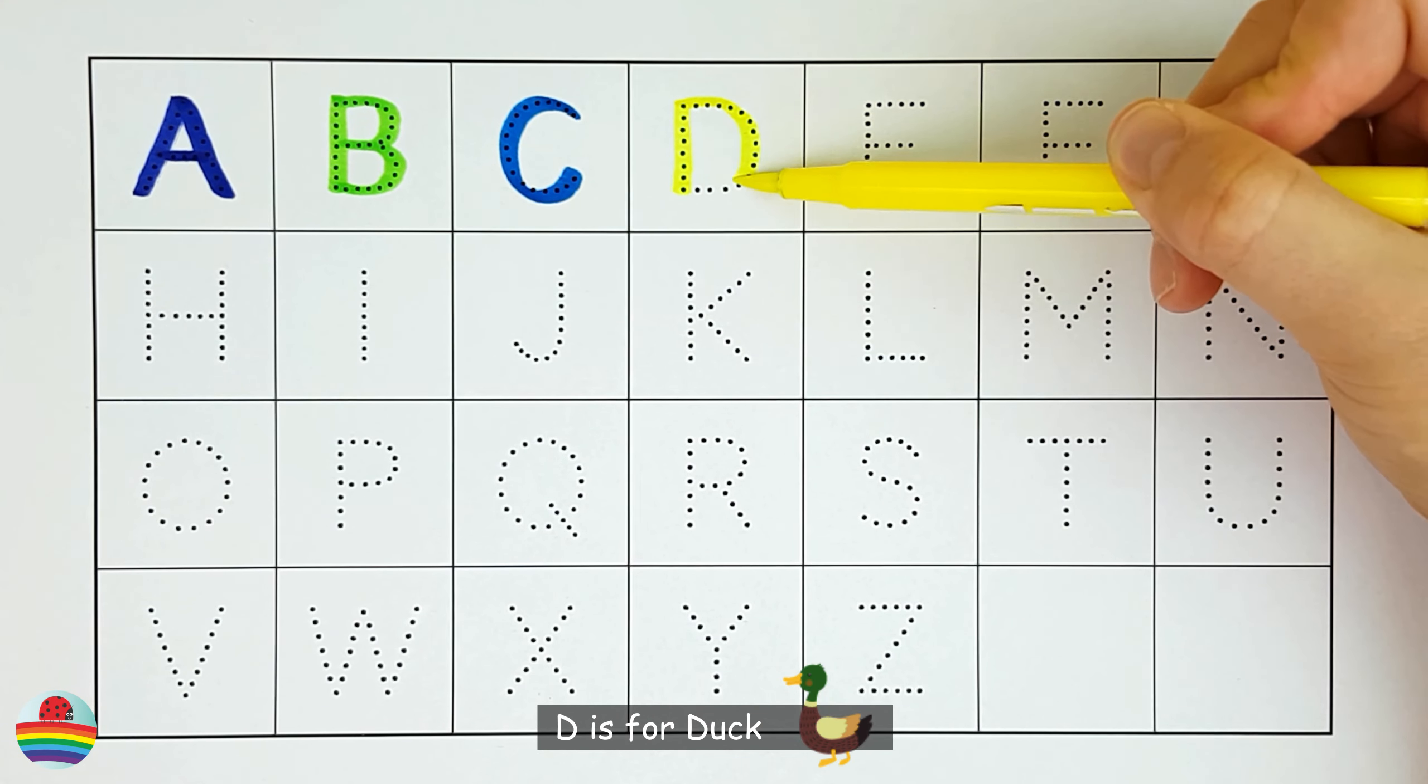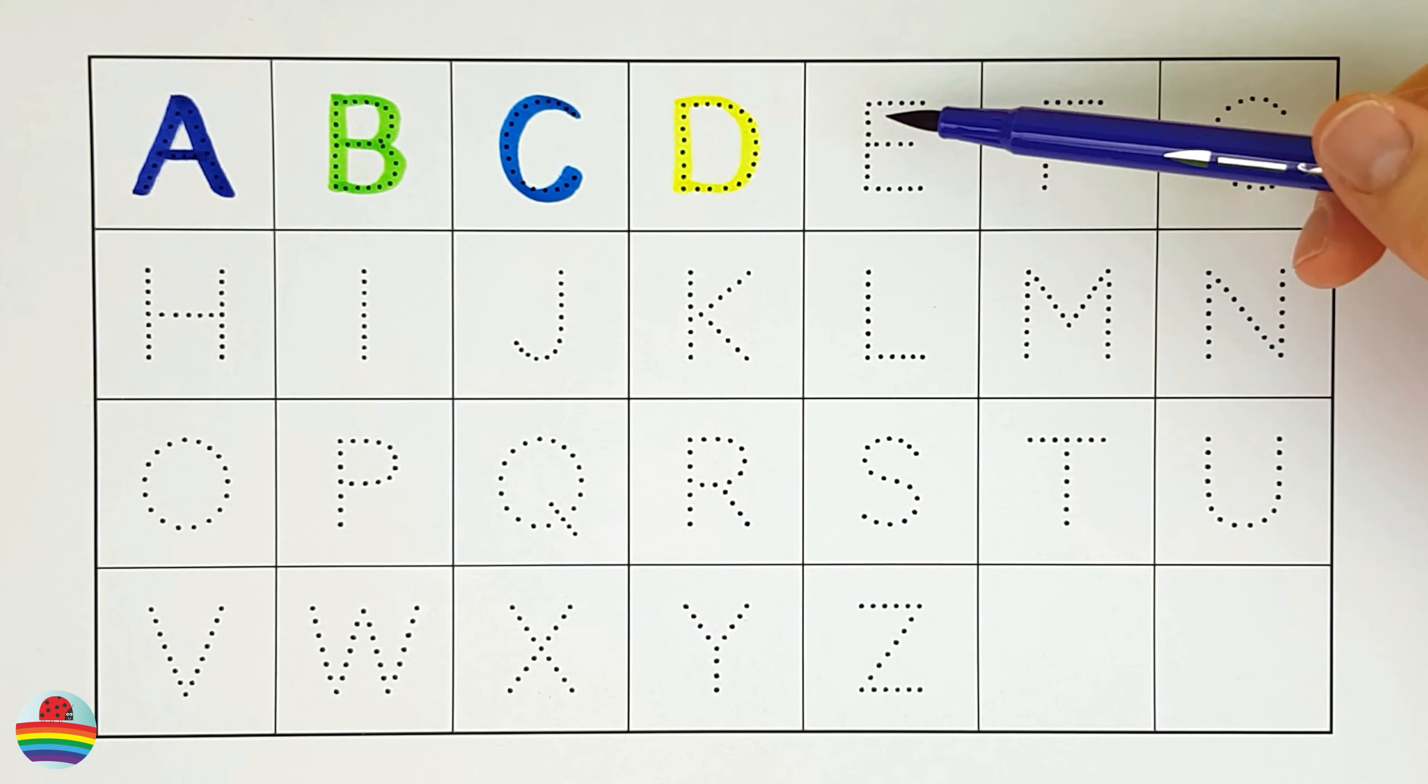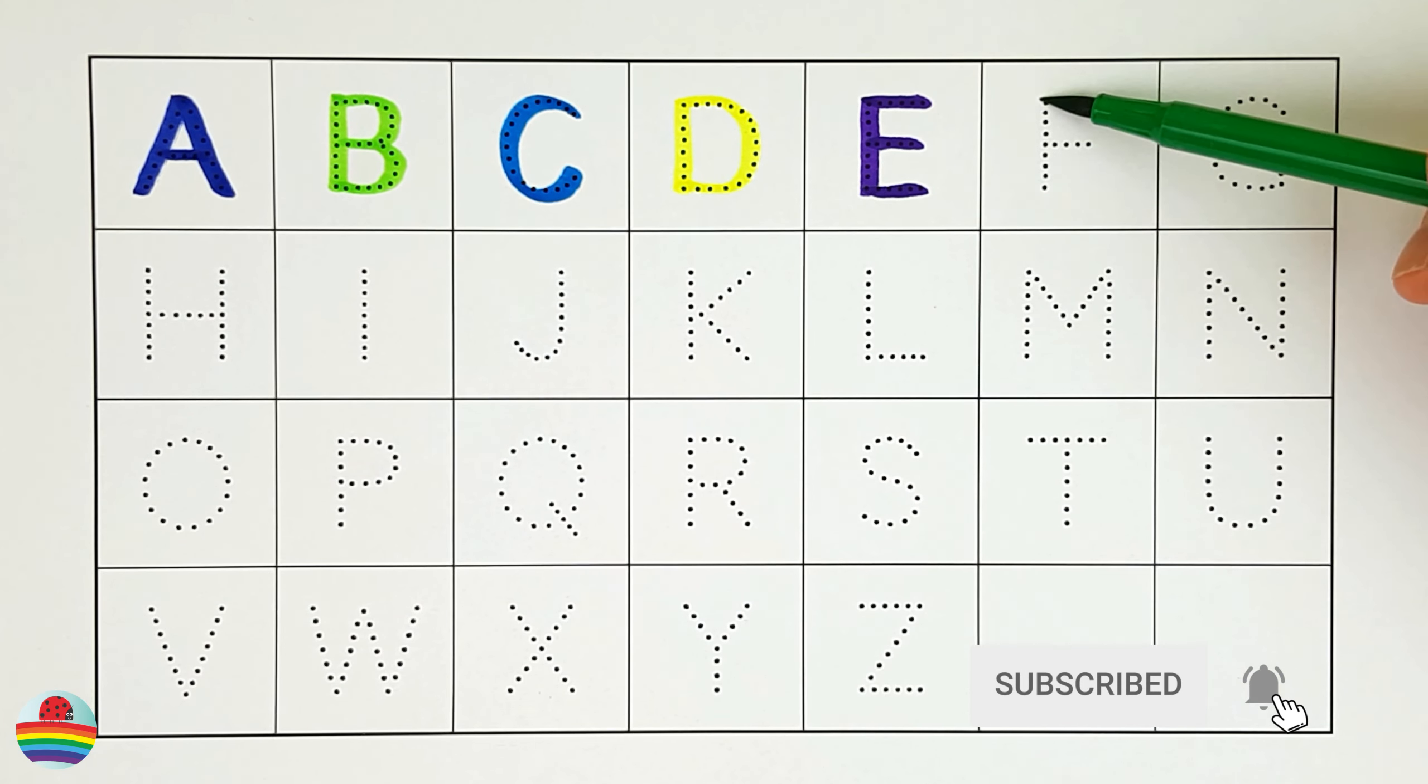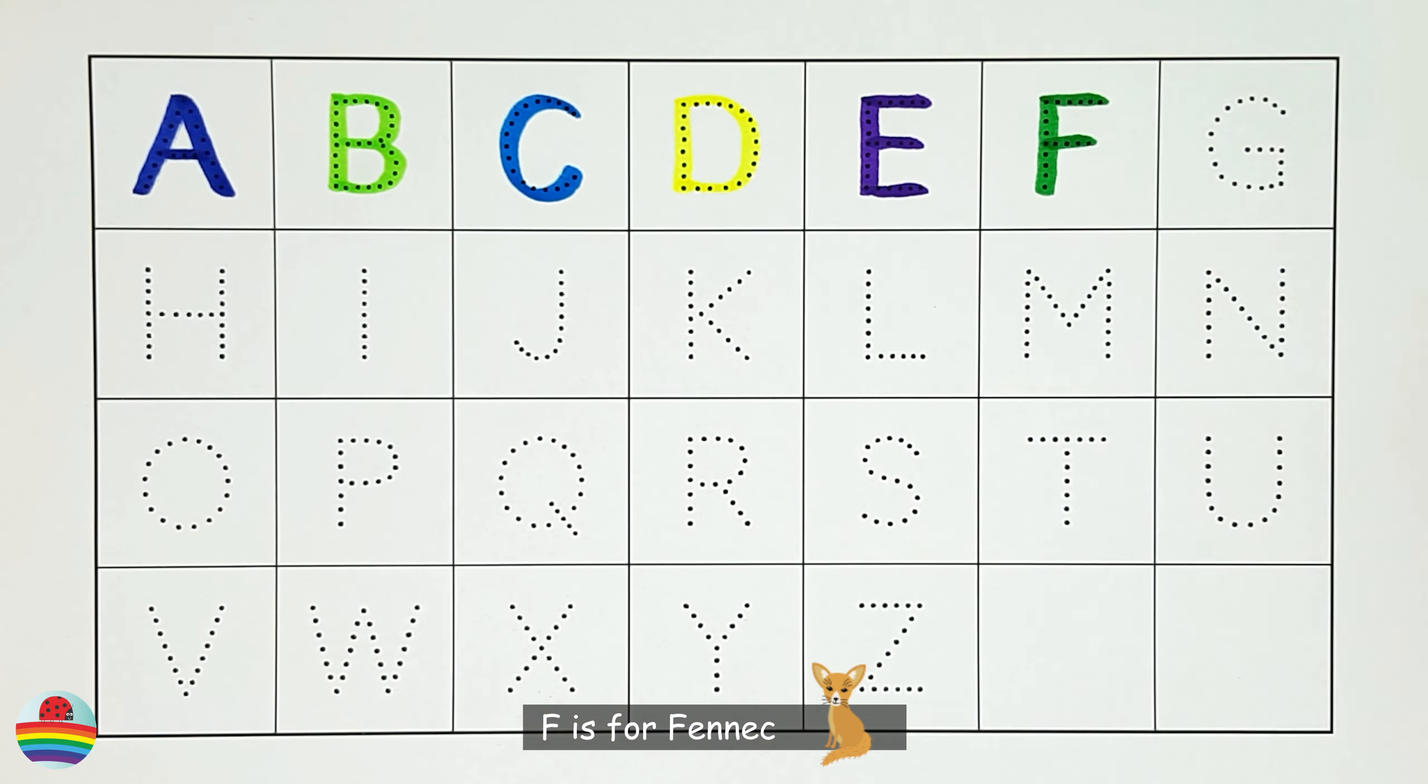D. D is for Duck. D. E. E is for Eagle. E. F. F is for Fennec. F.